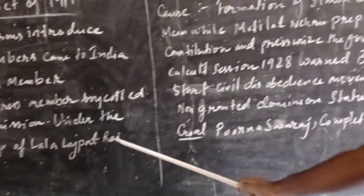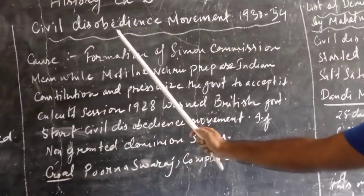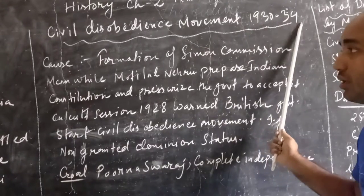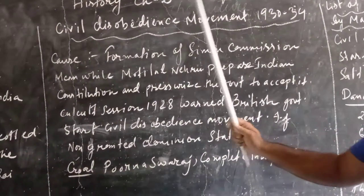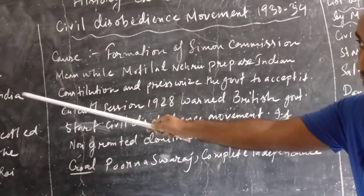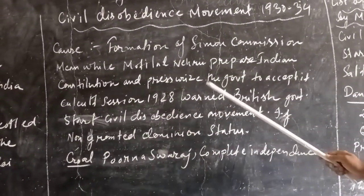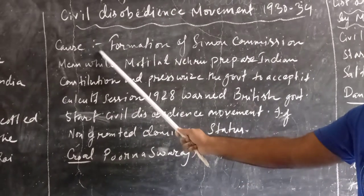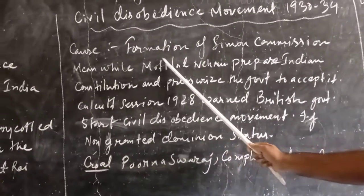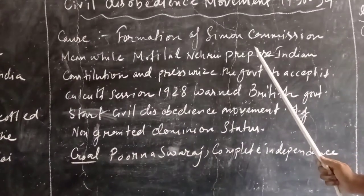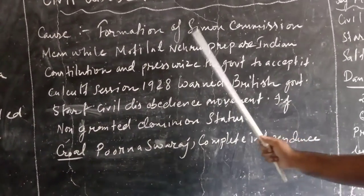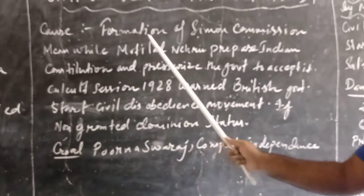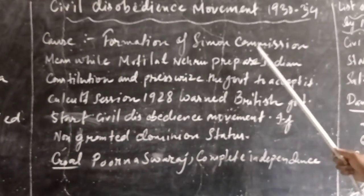Next, we will look at the Civil Disobedience Movement of 1930 to 1934. This Civil Disobedience Movement is also related to the Simon Commission. If we see the causes of the Civil Disobedience Movement, we can see that the formation of the Simon Commission made Indian people angry with the British government, as there were no Indians in the Simon Commission.